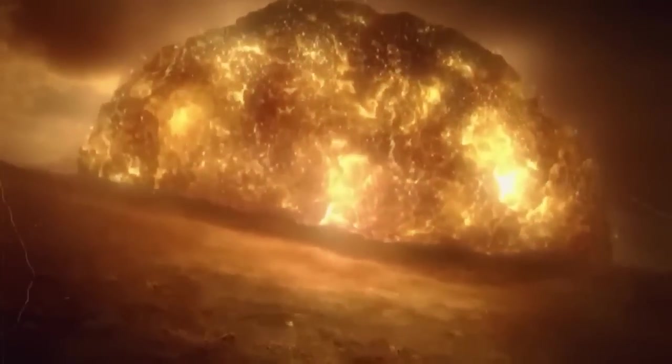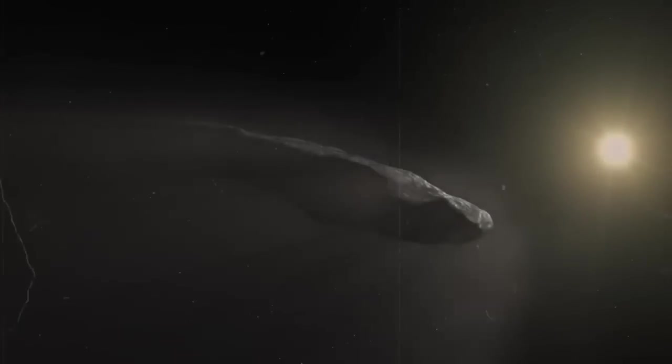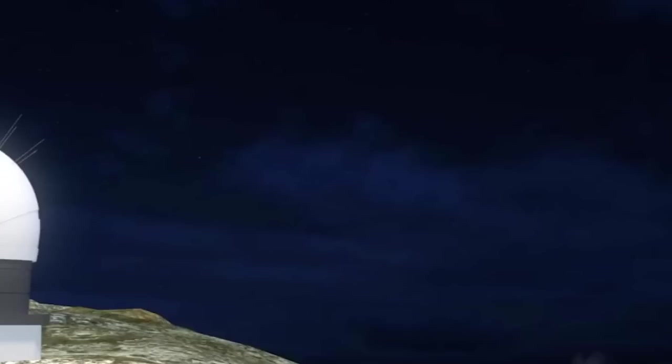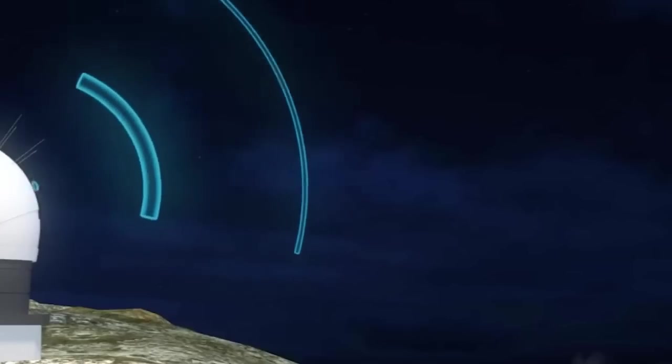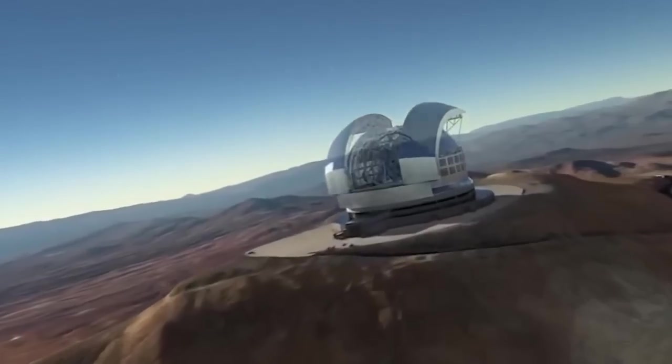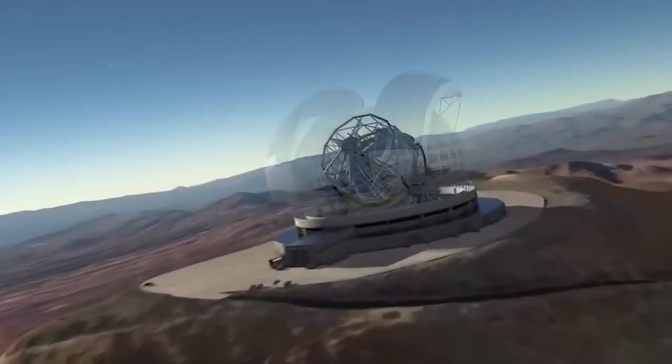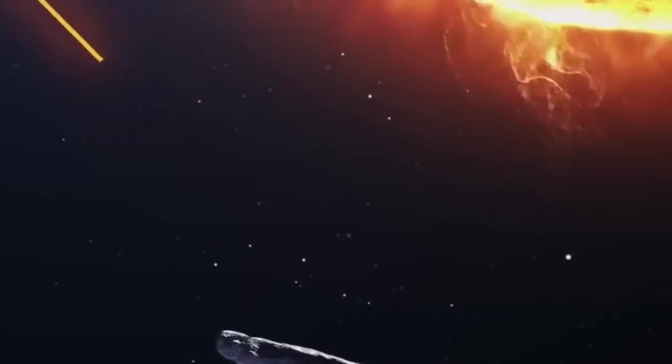This cigar-shaped object, approximately 800 meters long and about 80 meters wide, had traveled from a distant realm to visit our solar system. Its unusual shape and rapid speed, traveling at about 315,000 kilometers per hour, made it a subject of intense curiosity and speculation. Scientists and the general public alike were fascinated by this interstellar traveler.